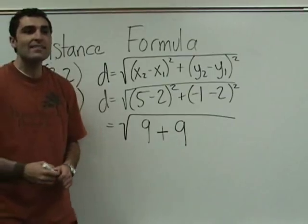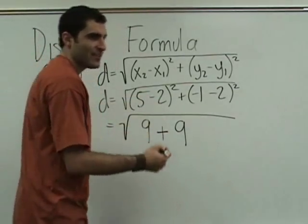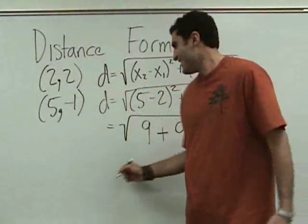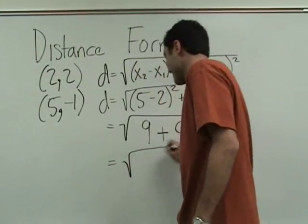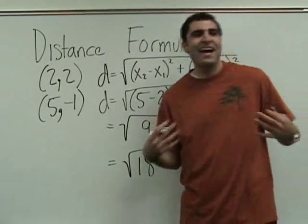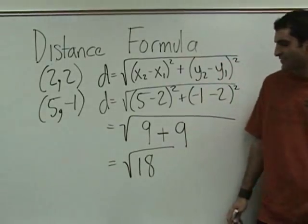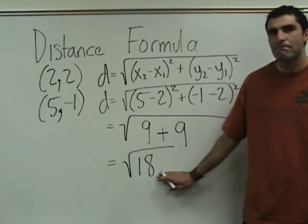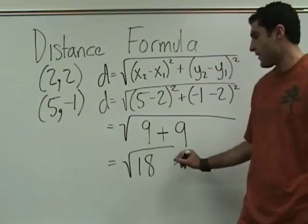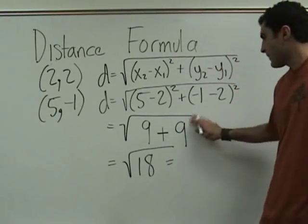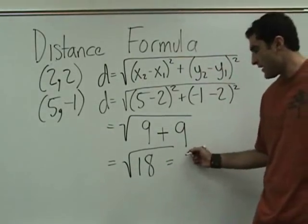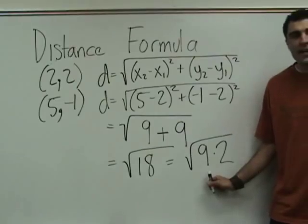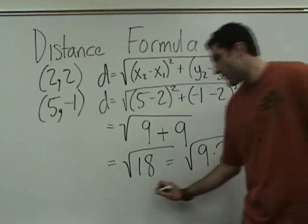9 plus 9 is 18. Square root of 18 — the factors of 18 where one is a perfect square are 9 and 2. The square root of 9 is 3. So it's 3 root 2.